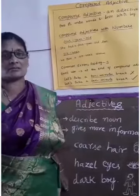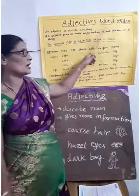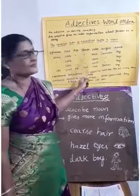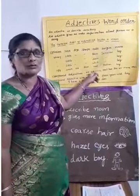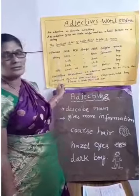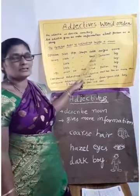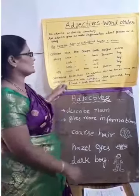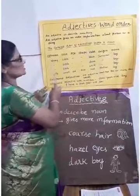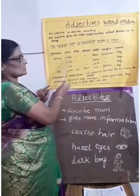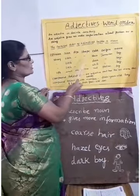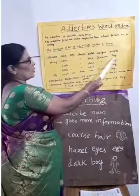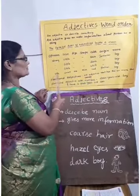We have to follow the word order when writing adjectives before a noun. The general order is: opinion, size, age, shape, color, origin, then the noun. For example: 'strong little black Jamaican boy' — strong is opinion, little is size, black is color, Jamaican is origin, and boy is the noun.